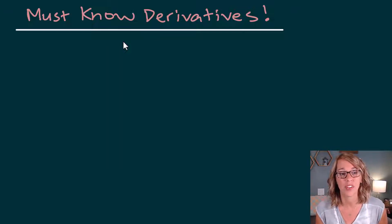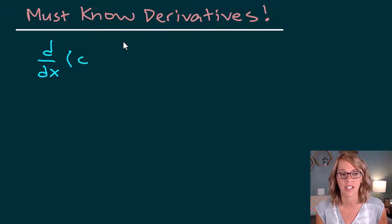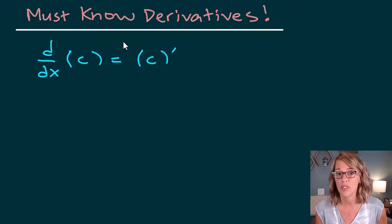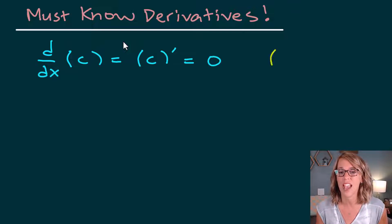I'm actually just starting with a constant. So if I were to take the derivative of any constant — so d/dx of a constant, we could also write this using prime notation — the derivative is equal to zero. For example, the derivative of five would be equal to zero.